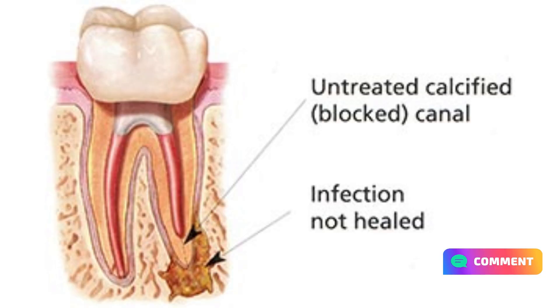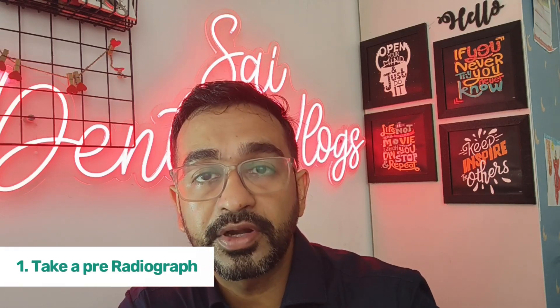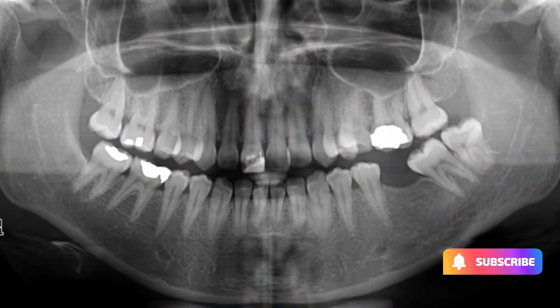Whenever you want to negotiate a calcified canal, there are some basic rules and protocols which you need to follow in order to achieve the full working length of the particular root canal you are doing. The first and foremost thing I recommend everyone to do before doing any RCT case is to take a pre-operative radiograph. The radiograph will tell you the canal shape, size, and whether it is calcified or not.